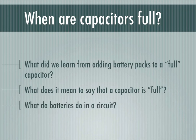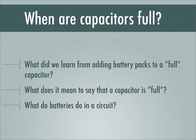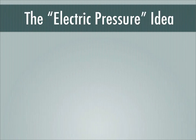What batteries seem to do in a circuit is they push, but they have a limited amount of push. A 4.5-volt battery pack can only push so much; if you add a second 4.5-volt battery pack, giving you 9 volts, that can push more. Volts can tell you how much it can push. But that's all batteries do — they push. Let's look more deeply into this idea of batteries pushing and see if there's some analogy we can use to understand what's going on in a circuit.